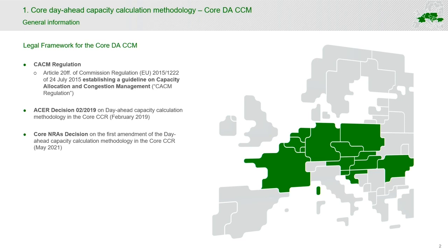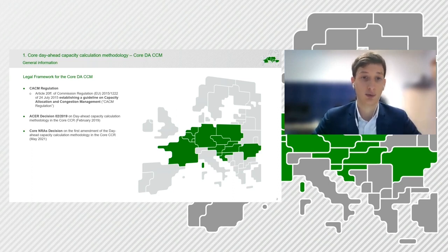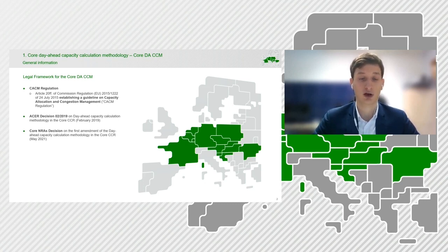There is the guideline on capacity allocation and congestion management, also called in short the CACM regulation from 2015, based on which Europe was divided into capacity calculation regions. It was decided that in the core capacity calculation region, shown on the picture, the flow-based day-ahead capacity calculation will be implemented. TSOs prepared their proposal for this methodology and submitted it to the core NRAs, which was then with some amendments approved by the ACER decision in February 2019.